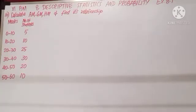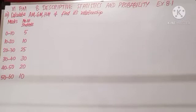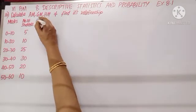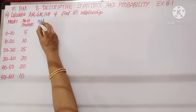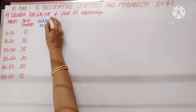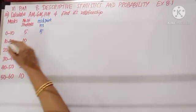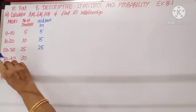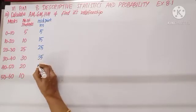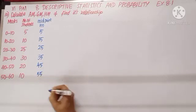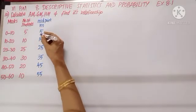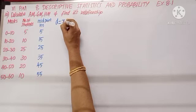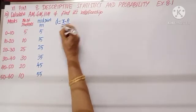Question number 10: Calculate arithmetic mean, geometric mean, and harmonic mean, and find the relationship given class intervals. The first step is to calculate the midpoint m of each class interval: 0–10 gives 5, 10–20 gives 15, 20–30 gives 25, then 35, 45, 55. If unsure, add the boundaries and divide by 2.